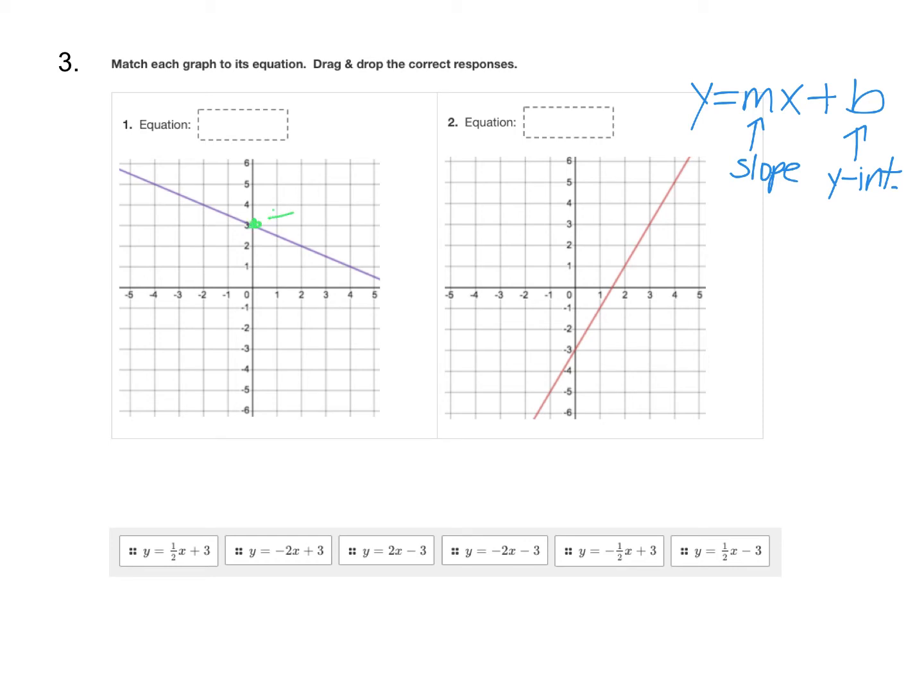Here the y-intercept is equal to three. Then you can find the slope in the same way that we did on number two. Pick two points, so there's another nice point there, and I can see that I have to go down one and right two. So my slope, which is the m, is going to be negative one-half.